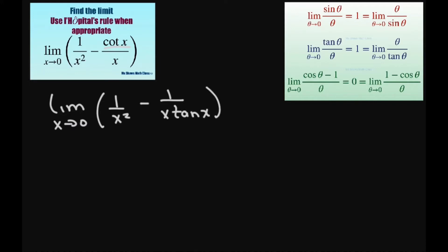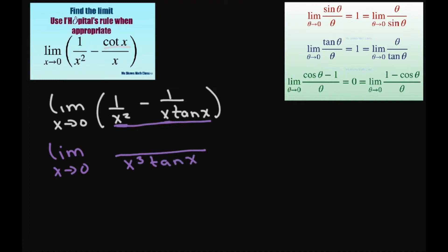The next thing I want to do is write this with a common denominator and put this together. The common denominator is going to be x cubed times tan of x. That's not your least common denominator, but it is a common denominator. And when you cross multiply, you're going to get x tan of x minus x squared in the numerator.